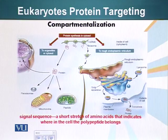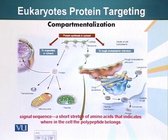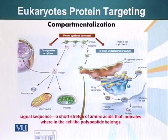Proteins that are destined for lysosomes, or which have to be secreted out or embedded in the plasma membrane — all those proteins, while they are being made, once the protein synthesis procedure starts, the whole process comes to a halt until the ribosome lands on the surface of the rough ER. And then the process continues.